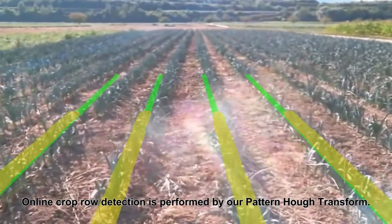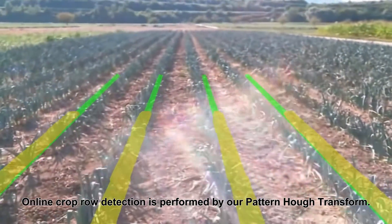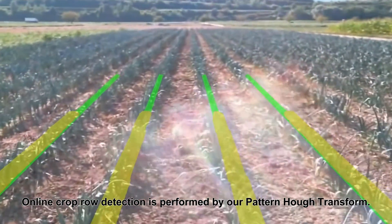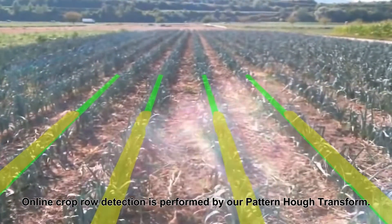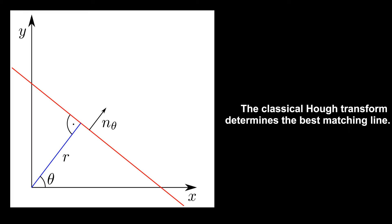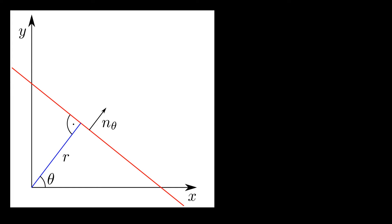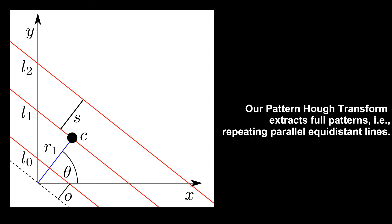We introduce a novel algorithm, the pattern Hough transform, to reliably estimate the correct crop row pattern. The classical Hough transform extracts the best matching line from 2D input data. These could be used to build a crop row pattern. In contrast, the pattern Hough transform searches for a crop row pattern directly — it finds the best match of parallel equidistant lines.